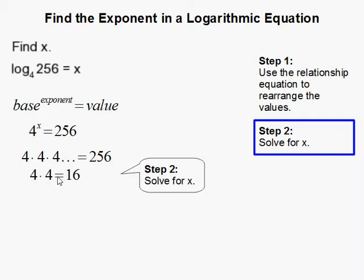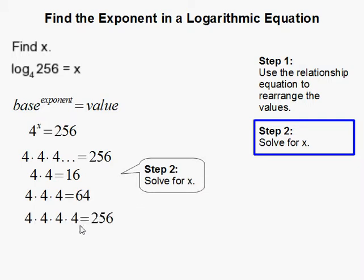So 4 times 4 is 16, so obviously that's too small. 4 times 4 times 4 is 64. If you do 4 times, that makes 256. So since we did it 4 times, that's our exponent, so x is equal to 4.